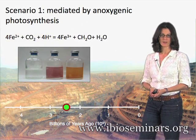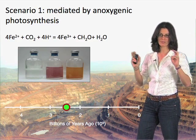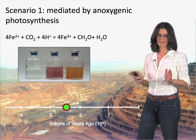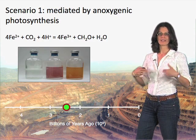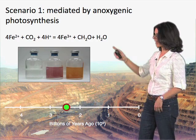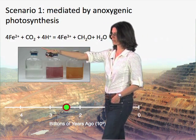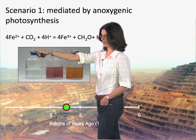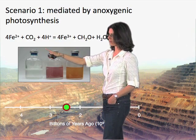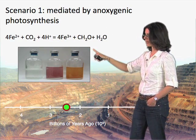The first scenario is one where a very primitive type of photosynthetic organism — primitive in quotes because actually this metabolism is remarkably sophisticated — nonetheless, this is primitive in the sense that it's a type of photosynthesis that does not generate oxygen. Rather, it's called anoxygenic, meaning there is an electron donor, in this case ferrous iron, that is oxidized to ferric iron, and that powers the reduction of inorganic carbon, CO2, to biomass.